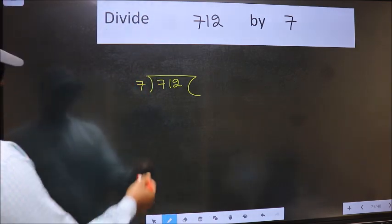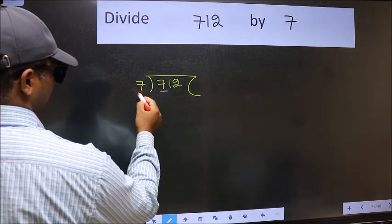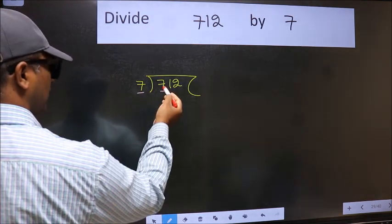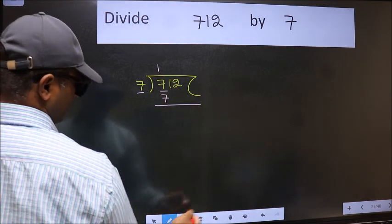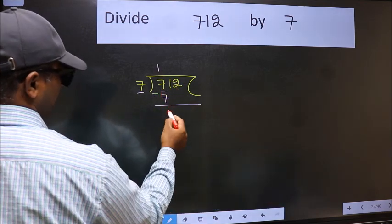Next. Here we have 7 and here 7. When do we get 7 in the 7 table? 7 once 7. Now we should subtract. We get 0.